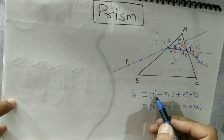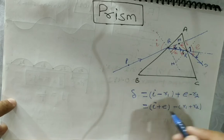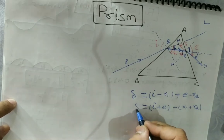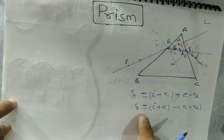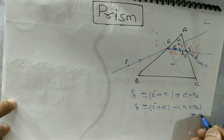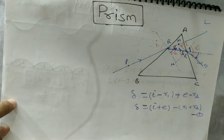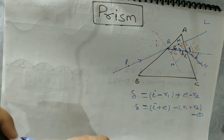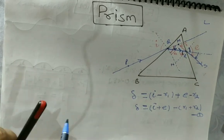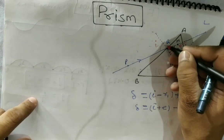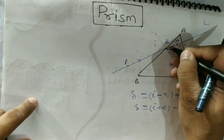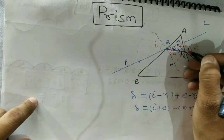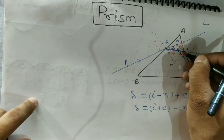Rearranging, the total deviation δ equals i plus e minus (r1 plus r2). Remember, i, r1, r2, and e are all angles. Let this be equation number 1. Now, note that since these are normals, each makes a 90-degree angle.